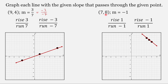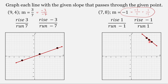For the last problem, we have a point of 7, 8 and a slope of negative 1. We start by graphing the point 7, 8. With a slope of negative 1, we can write this as negative 1 over positive 1, or positive 1 over negative 1 — all three mean the same value. From the starting point, we can rise 1 and move to the left 1, or rise negative 1 — go down 1 — and move to the right 1, ending up with our line.